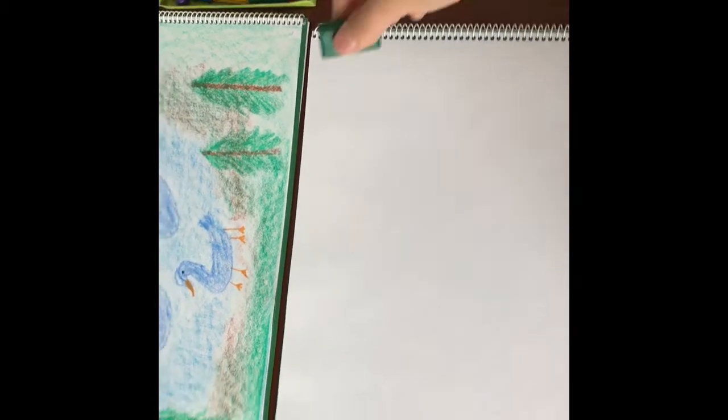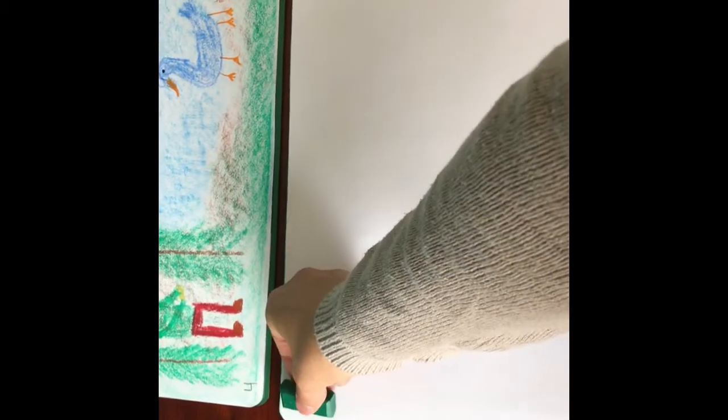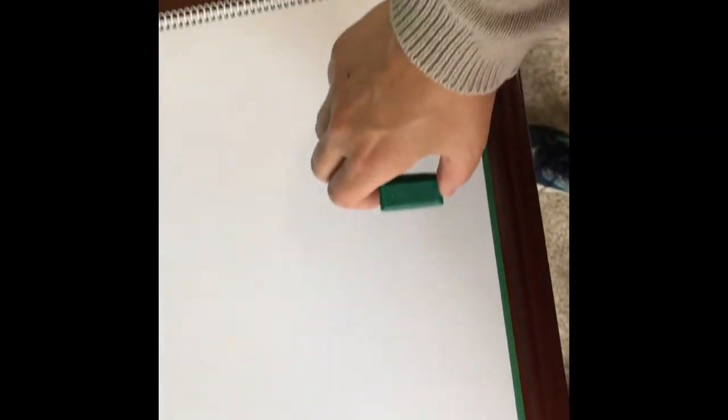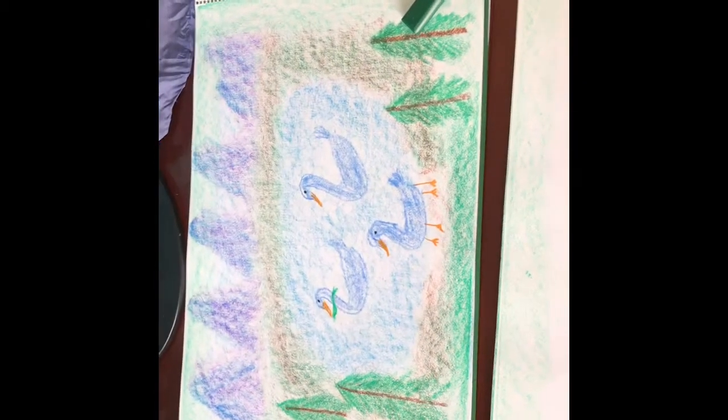So in my blank book here I'm going to grab my green block crayon and starting at the top using Papa Bear I'm going to make a border going across, down, across and down.